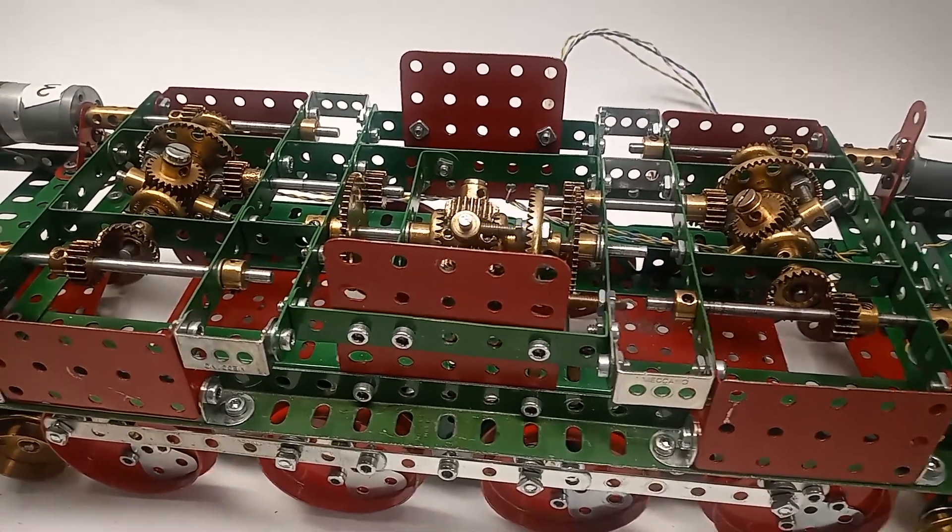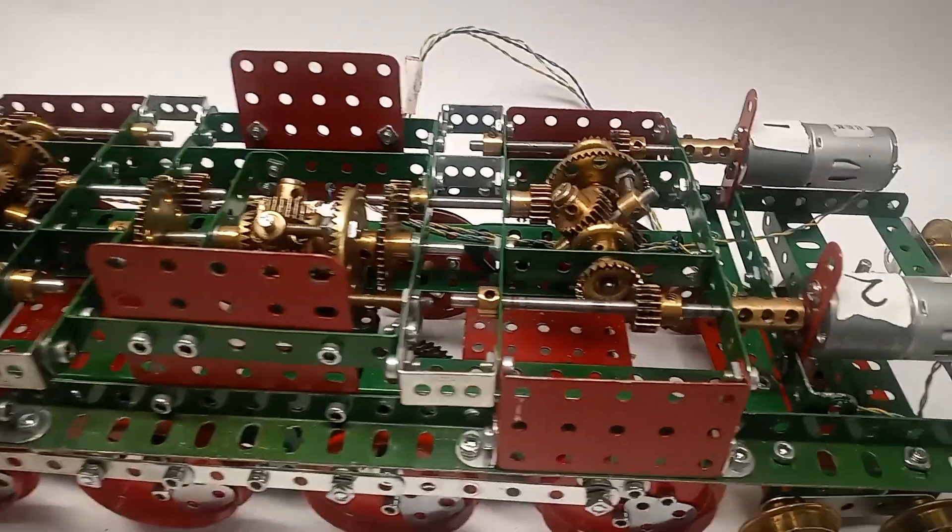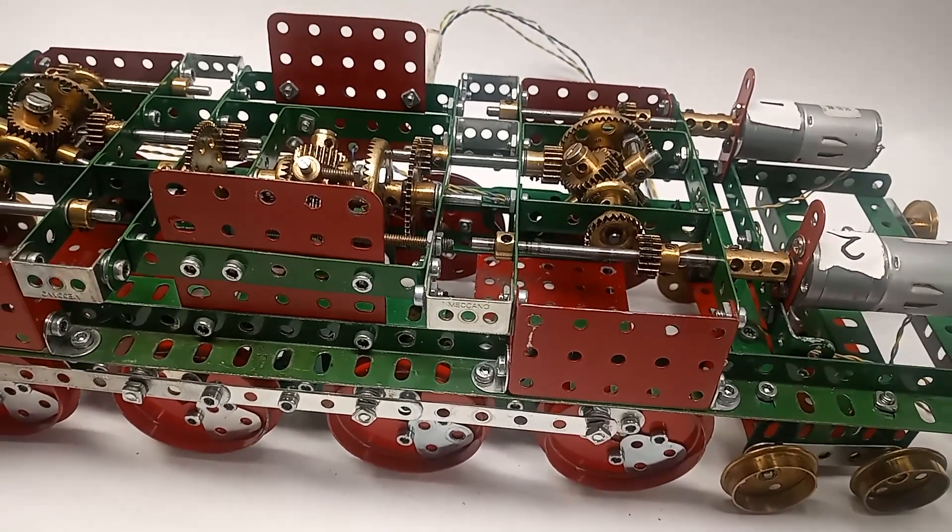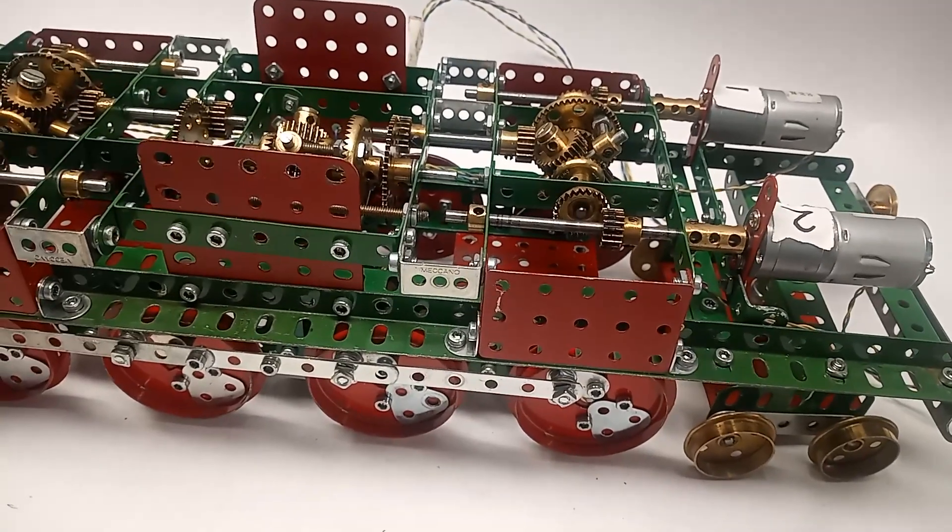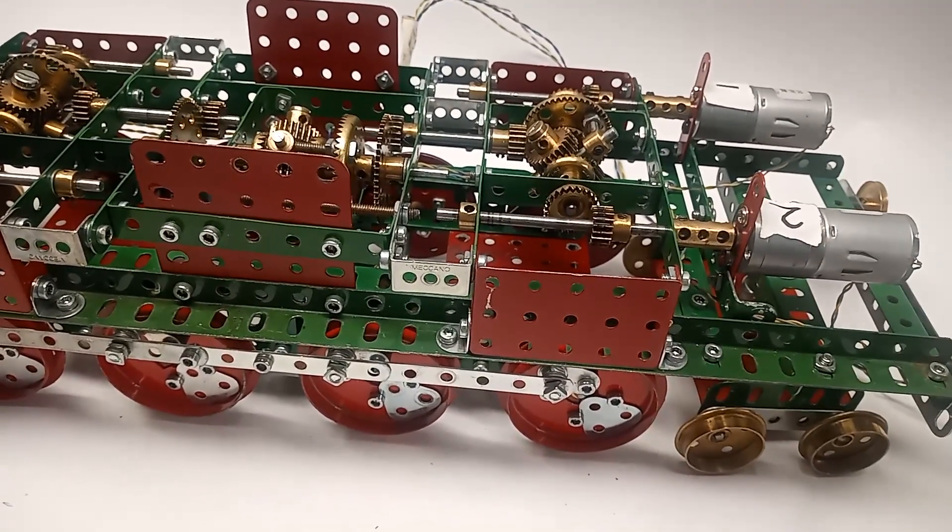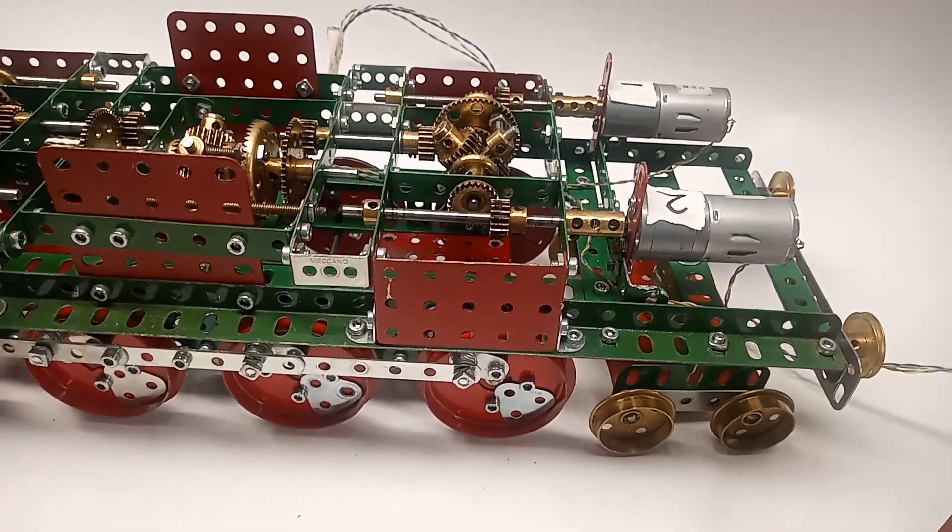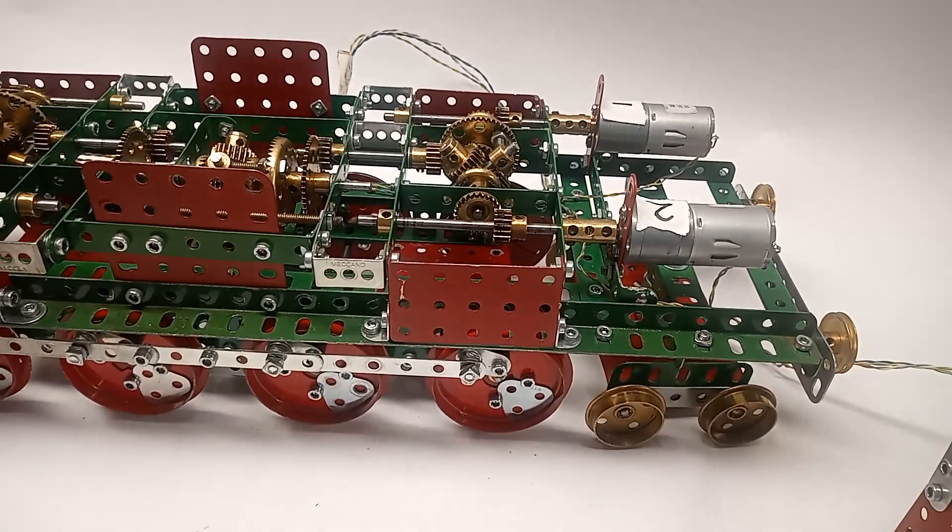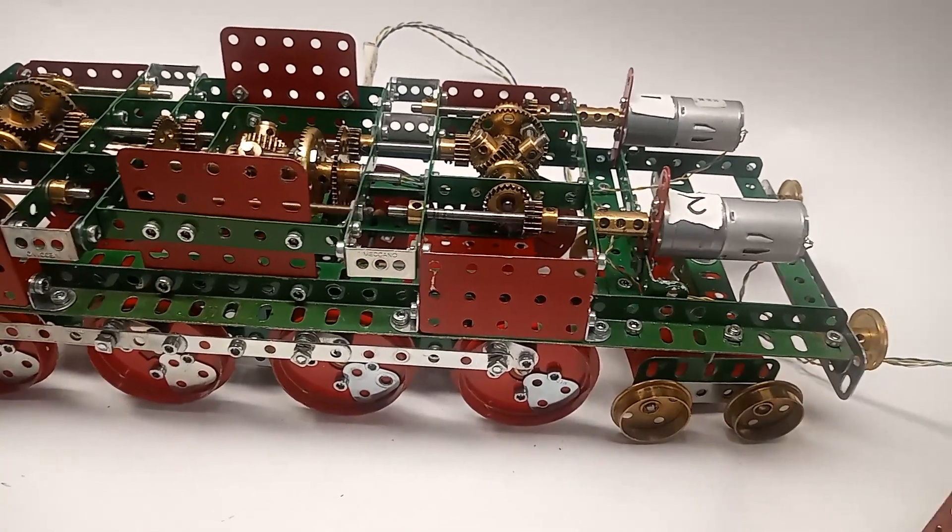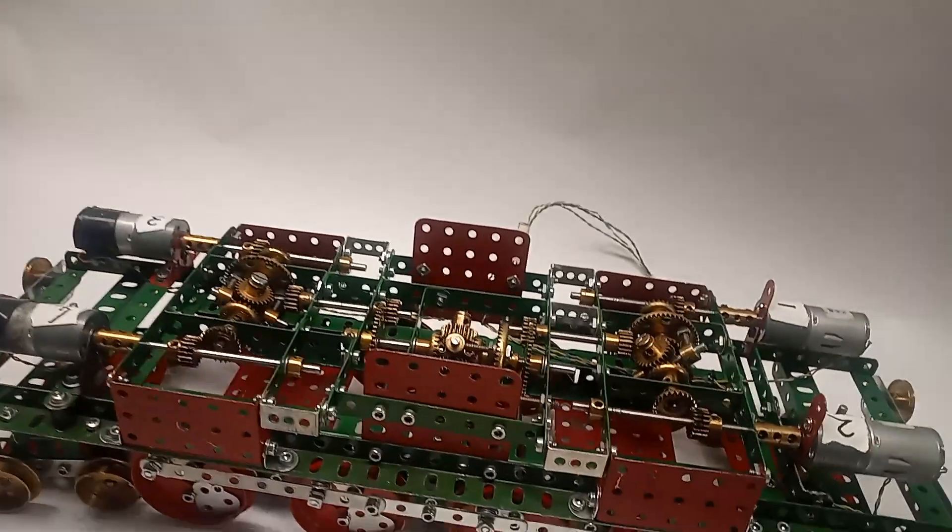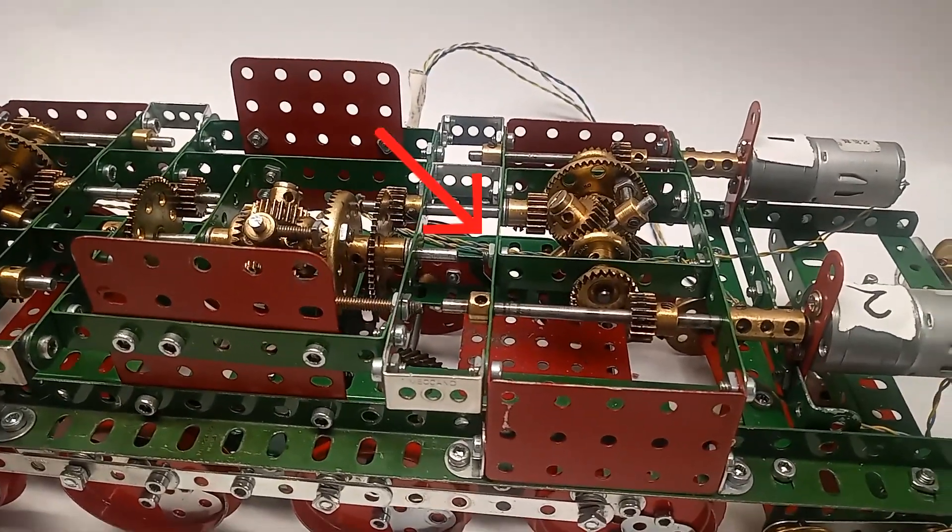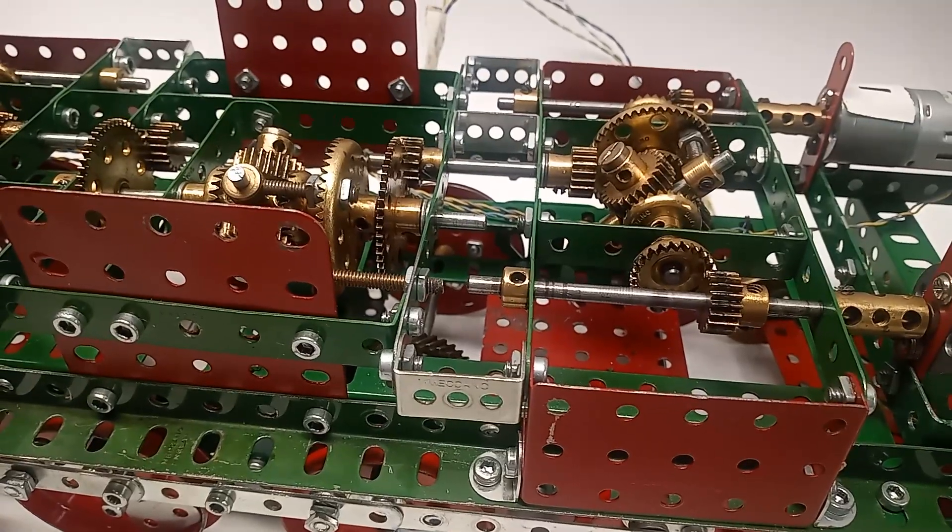The differential design that I have used is the smallest that I can make. As it was designed for a car but it's used the other way around, there is a 2.6 to 1 increase in speed from the crown contrite gear to the pinion. This is compensated by the 3 to 1 reduction pair that connects the output to the final differential.